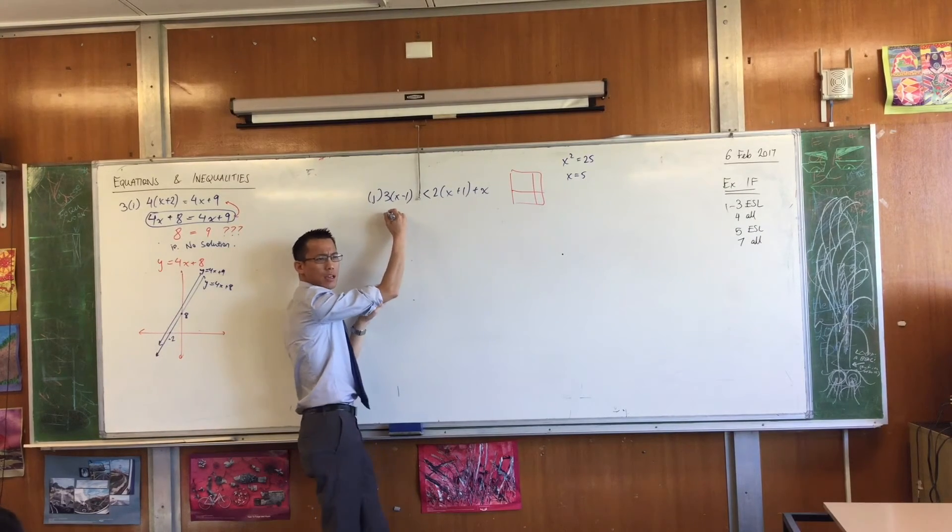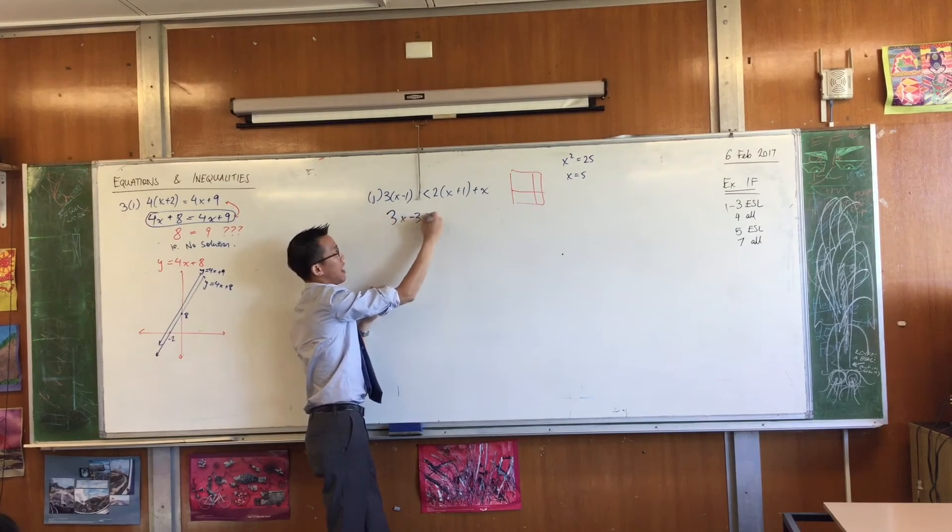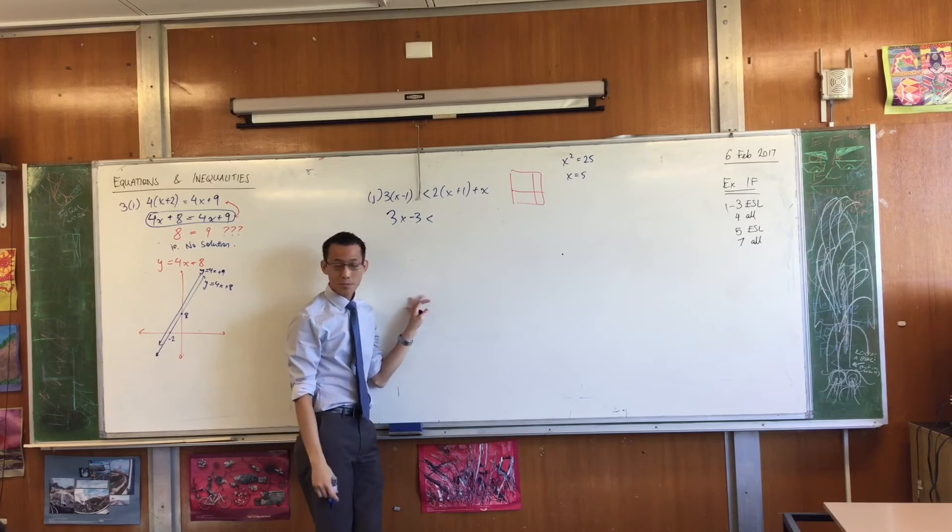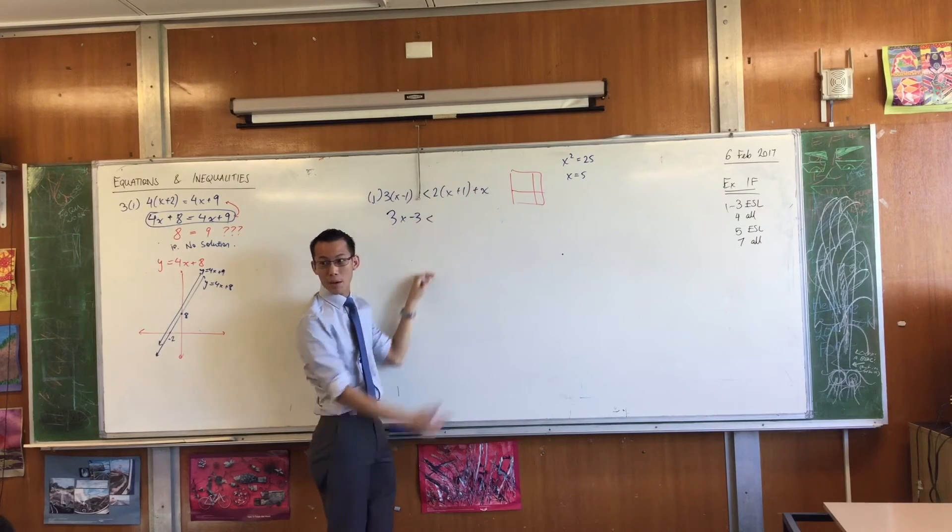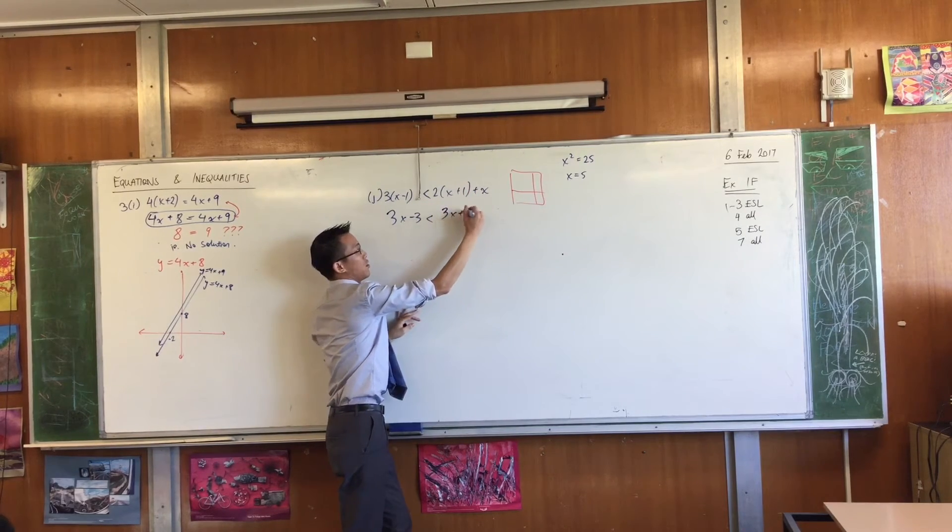So, left hand side is going to give me... Good. And right hand side is going to give me 2x plus 2. 2x plus 2. And then another x. You guys are bright. I'm going to do that in one line. And I'm going to say 3x plus 2.